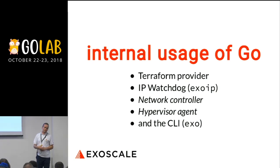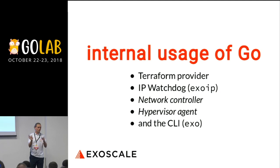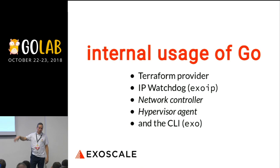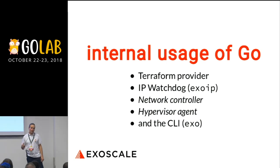There is a feature called elastic IP where you can assign an IPv4 to many machines and the traffic is load balanced, round-robin around them. There is a little agent you can install on the machine so they check around them. If another machine disappears, the IP is not routed there anymore. This is also written in Go.